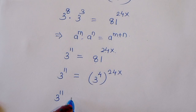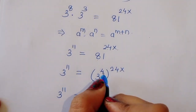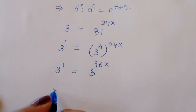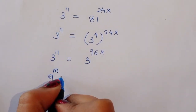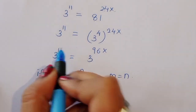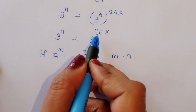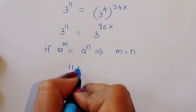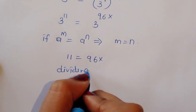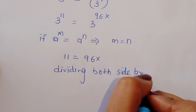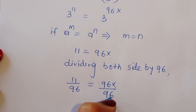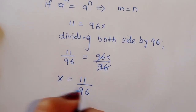We can write 81 as 3 power 4, so 81 raised to 24x becomes 3 power 4 times 24x, which is 3 power 96x. So 3 power 11 is equal to 3 power 96x. Using the rule: if a power m equals a power n then m equals n, we get 11 equals 96x. Dividing both sides by 96: x is equal to 11 upon 96.